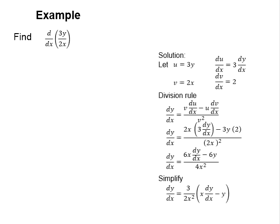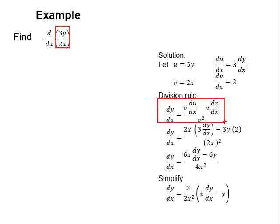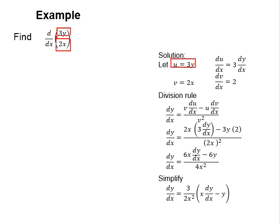Let us try this example. You are asked to differentiate these functions. These functions appear in the form of divisions. Therefore, you may use the division rule to solve it. First, set u equals to 3x and v equals to 2x.